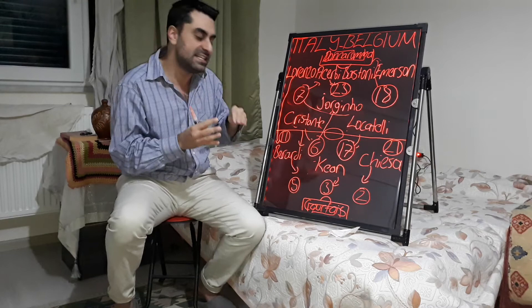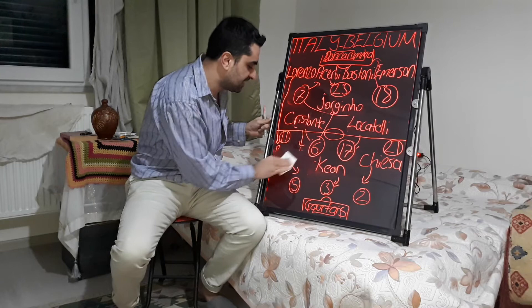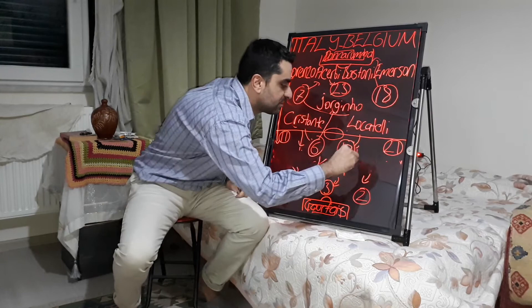For the last substitution for Italy, Berardi and Chiesa came off, and Insigne and Bernardeschi replaced them. For Belgium, Yannick Carrasco came off and Trossard replaced him. But the game finished 2-1, and Italy deserved to win in the UEFA Nations League.